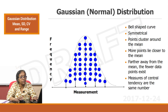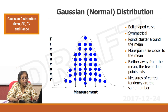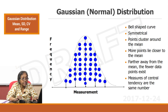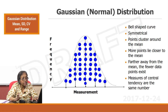Gaussian or normal distribution is a bell-shaped curve. It is symmetrical — if this is the mean, it is symmetrical and the points cluster around the mean. More points lie closer to the mean; farther away from the mean, fewer data points exist. Measures of central tendency are the same number, so mean equals mode equals median.